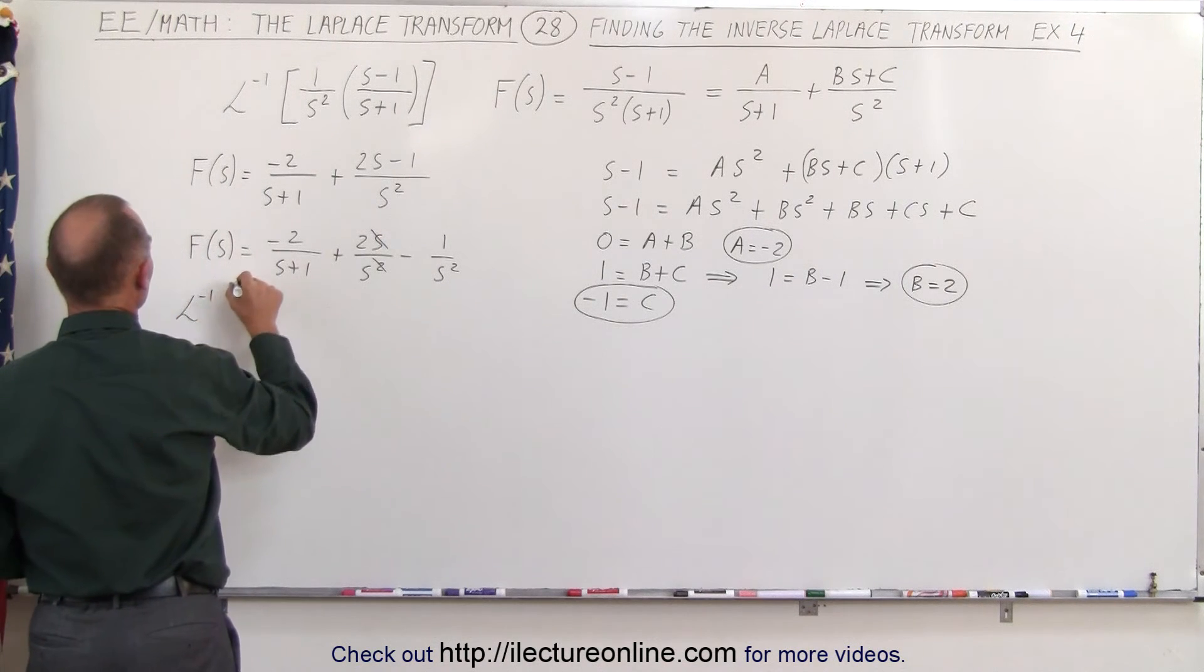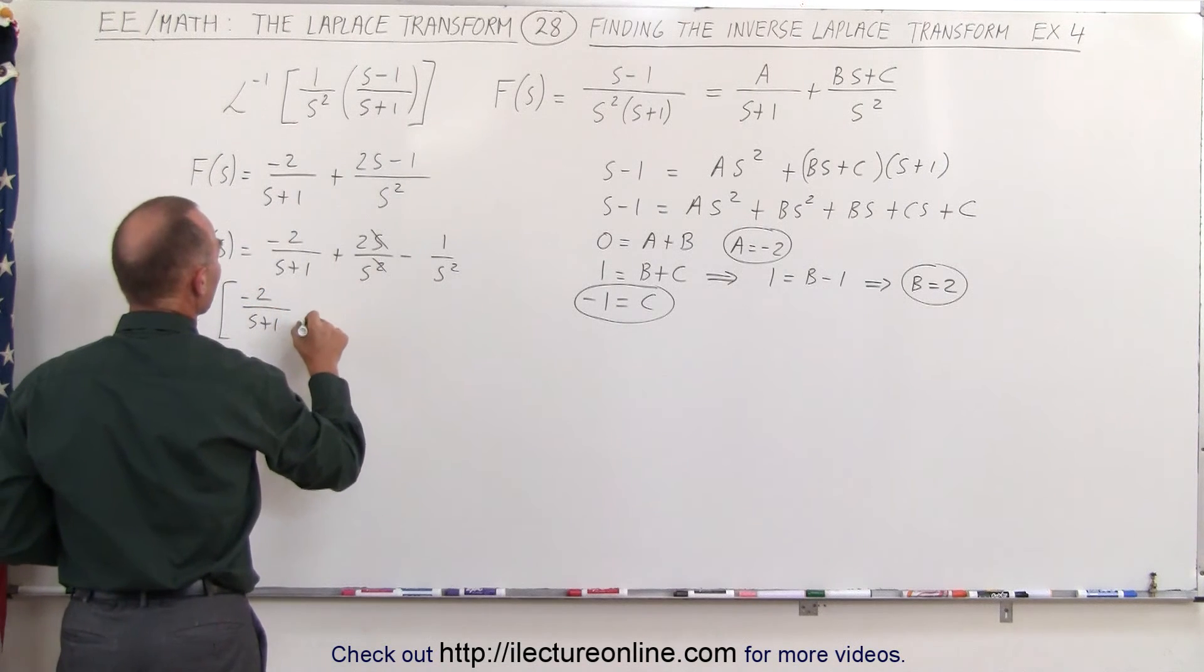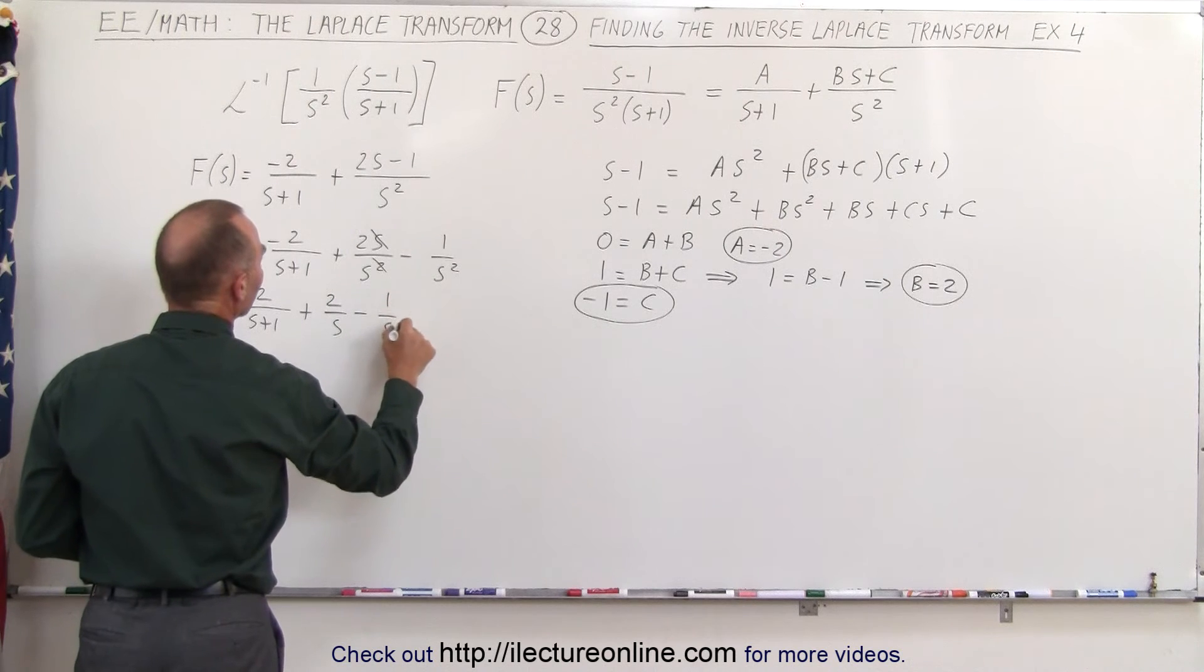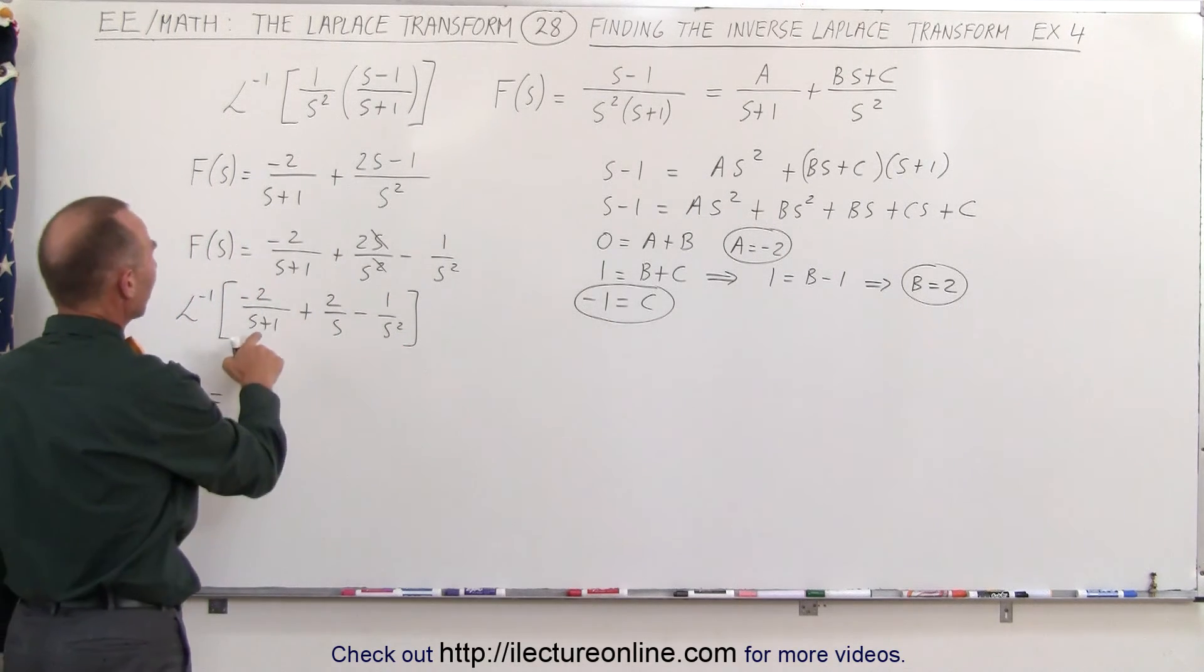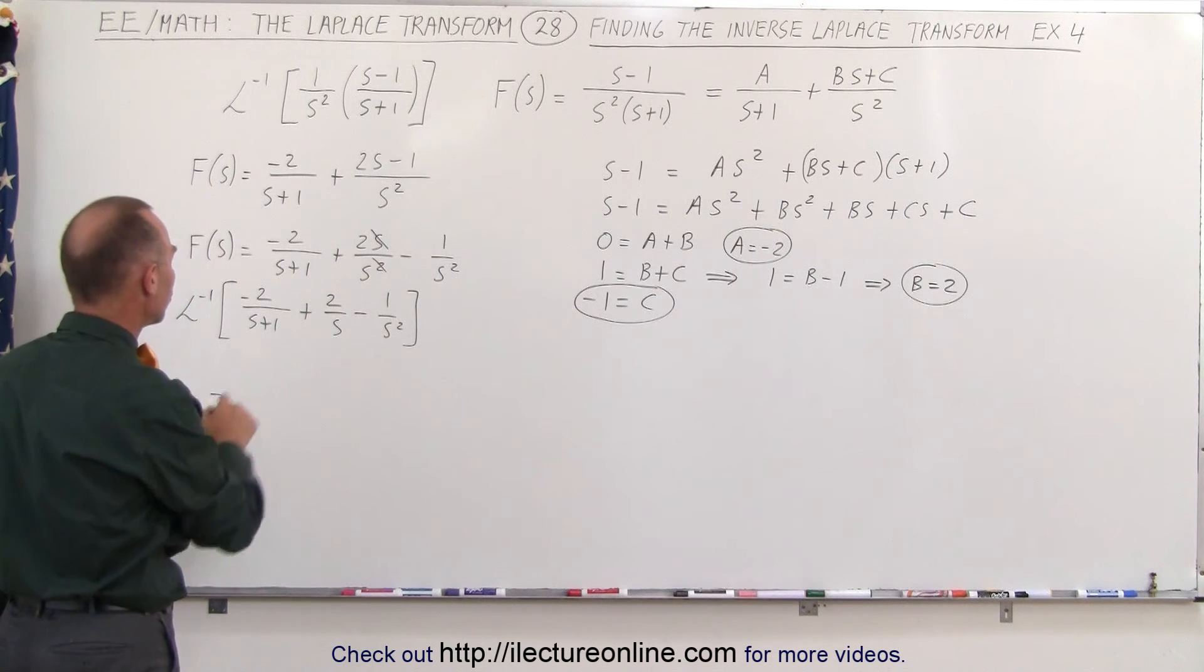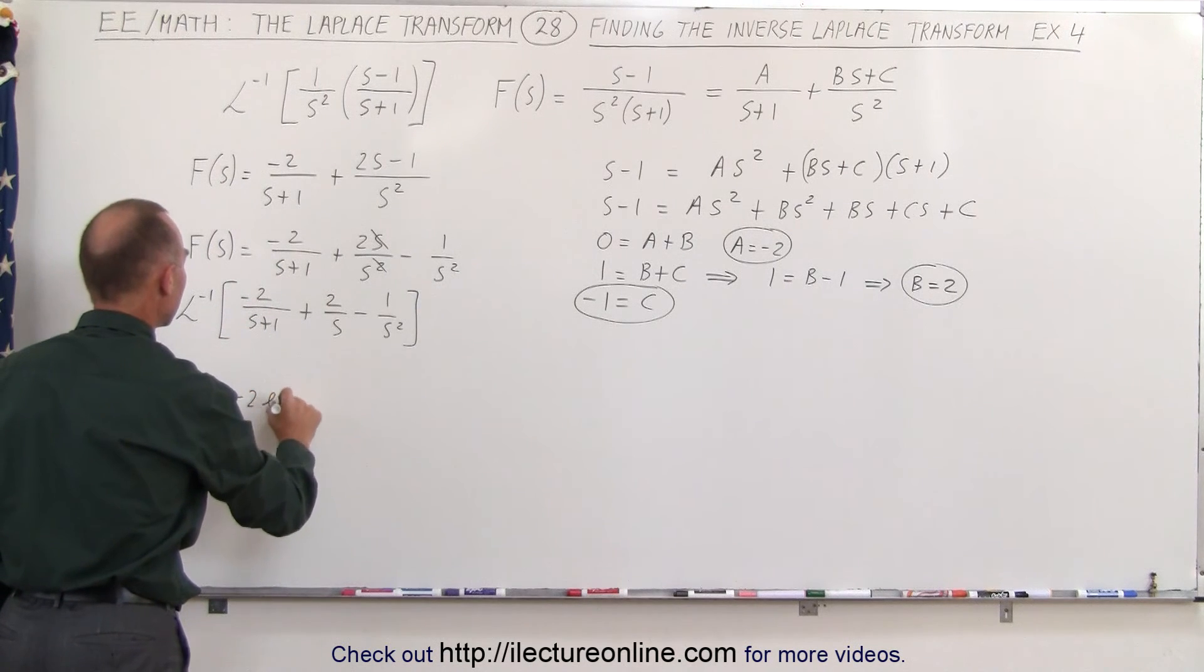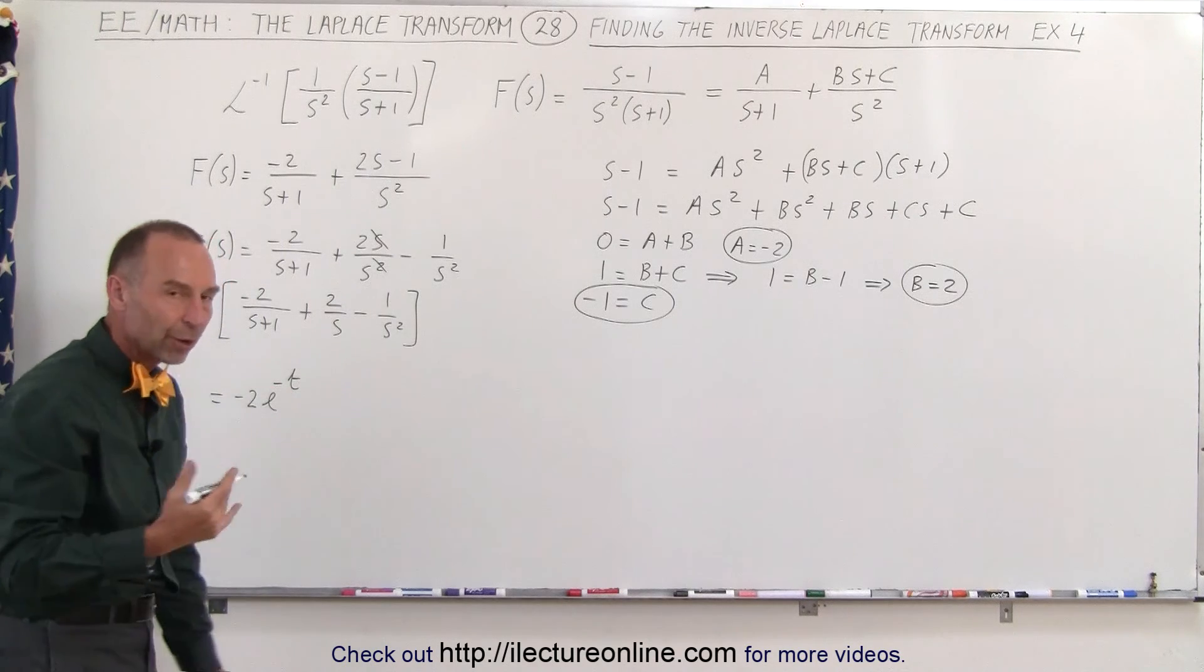The inverse Laplace transform of minus two over s plus one, plus two over s, minus one over s squared is as follows. First of all, I have an s plus one, which means I need an e to the minus t term in there. I have a minus two, so minus two e to the minus t times u of t, if you want to write that.